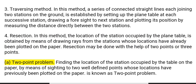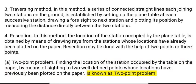a. Two-point problem: Finding the location of the station occupied by the table on the paper by means of sighting to two well-defined points whose locations have previously been plotted on the paper is known as the two-point problem.